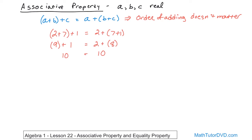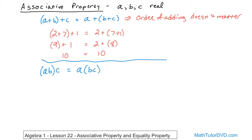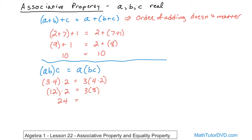We also have the associative property of multiplication, which is exactly the same idea. If we take A times B and then multiply by C, we get the same answer as if we multiply B times C first and then multiply by A. For example, with A equals three, B equals four, and C equals two: on the left, three times four is twelve, and twelve times two is twenty-four. On the right, four times two is eight, and eight times three is also twenty-four.